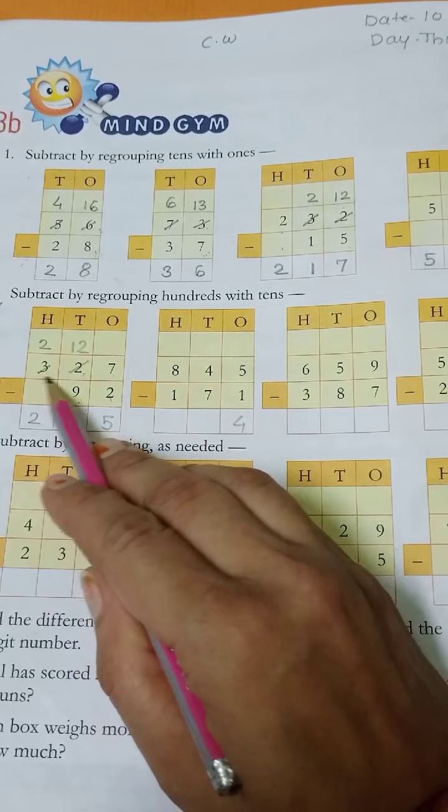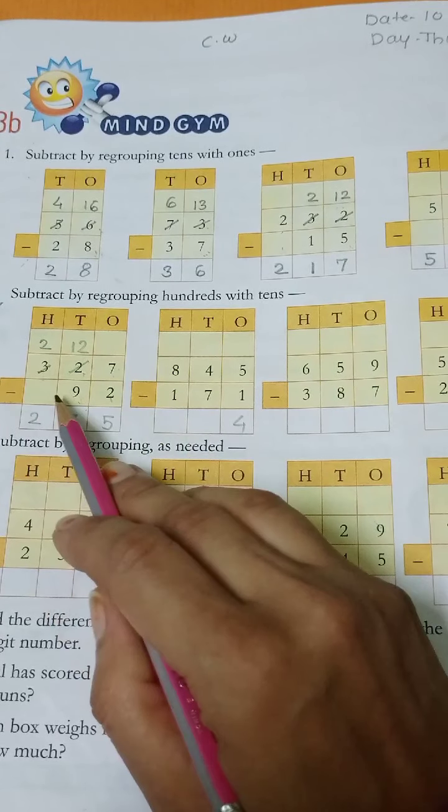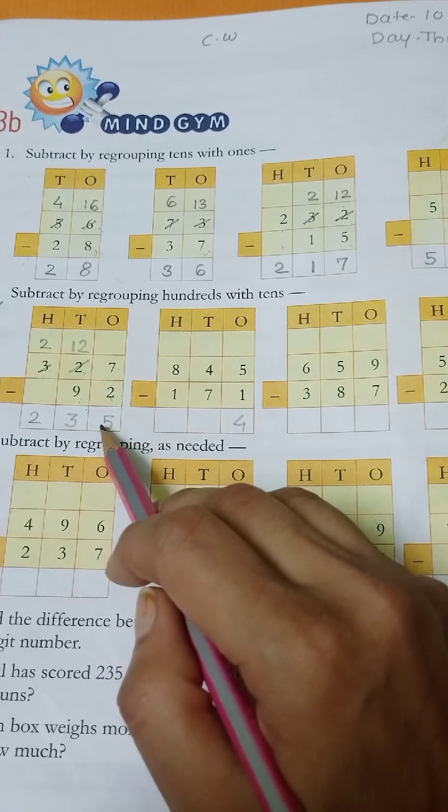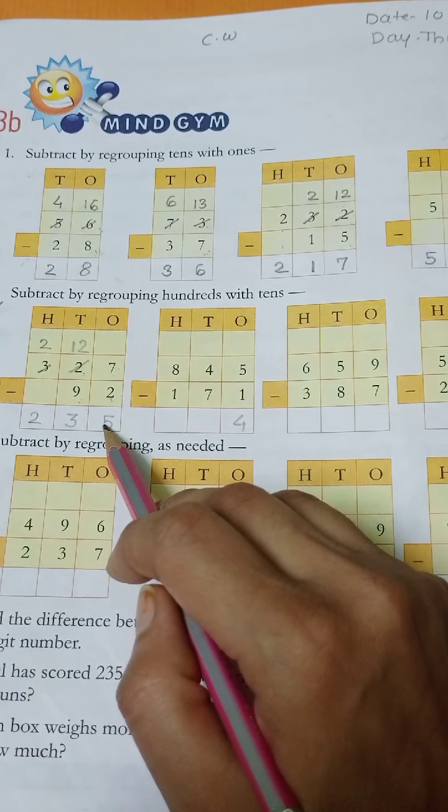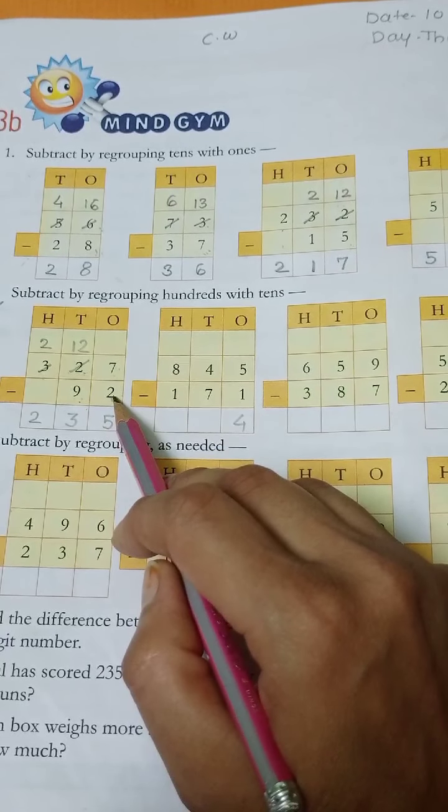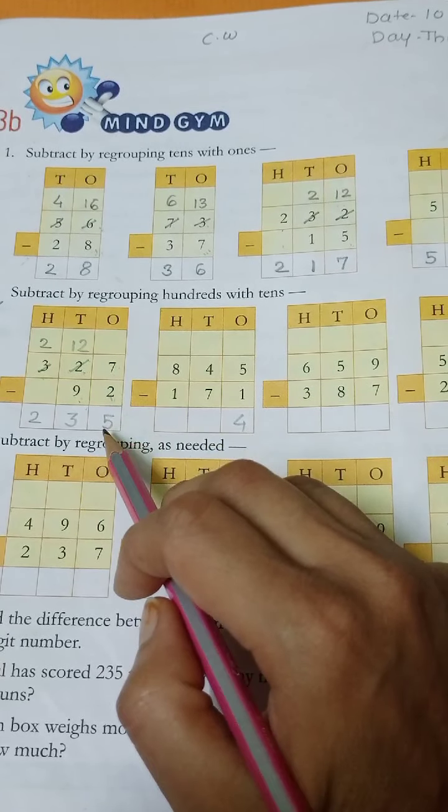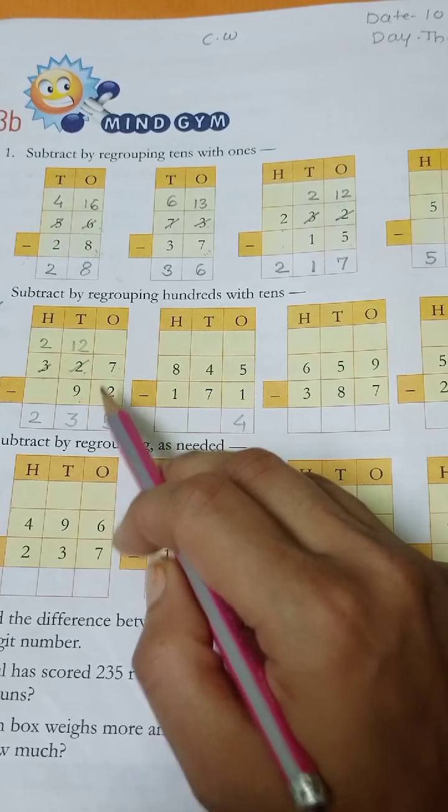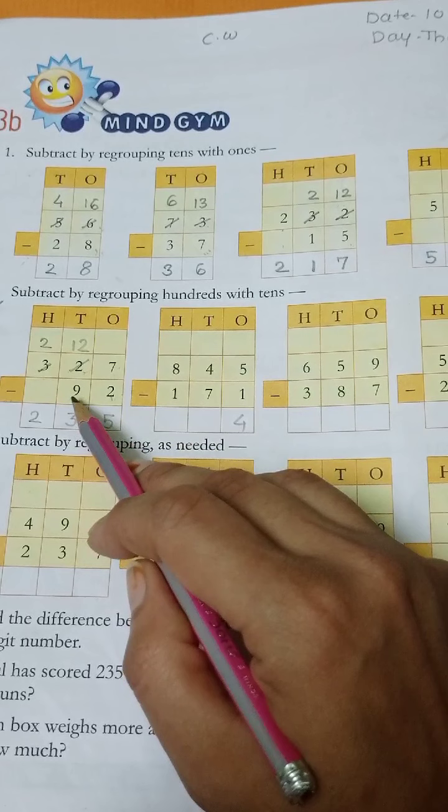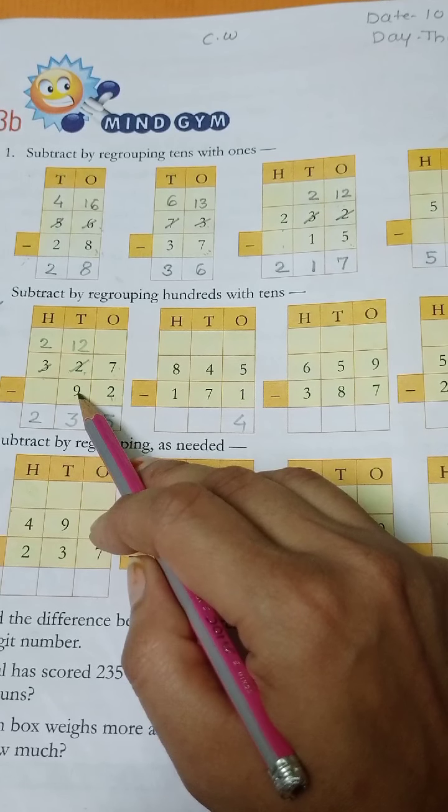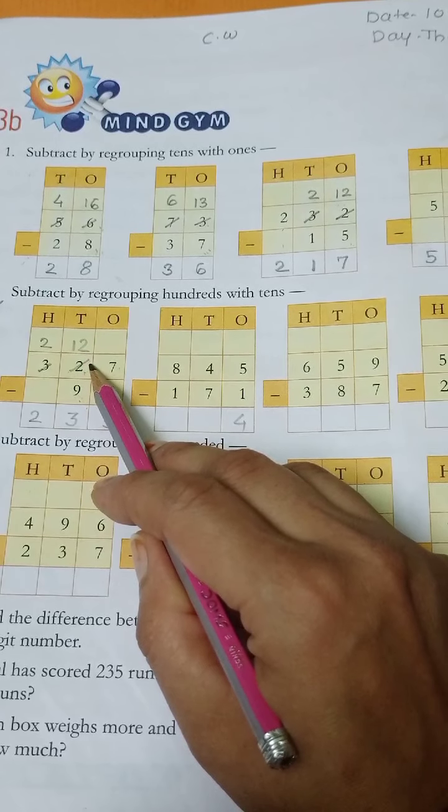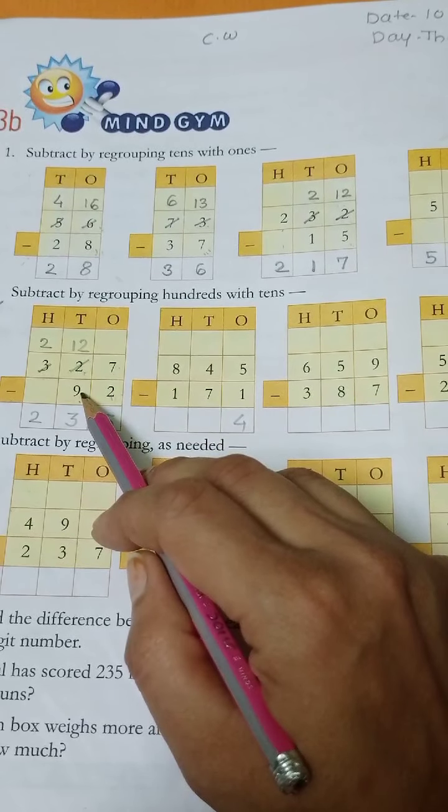Here, 327 minus 92. 7 minus 2 is equal to 5. 7 is a greater number and 2 is a smaller number, so you can easily solve 7 minus 2 is 5. Then 2 minus 9, is it possible? No. Why? Because 2 is a smaller number and 9 is a greater number.